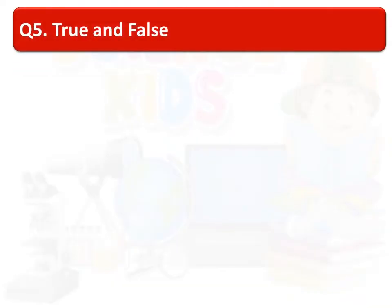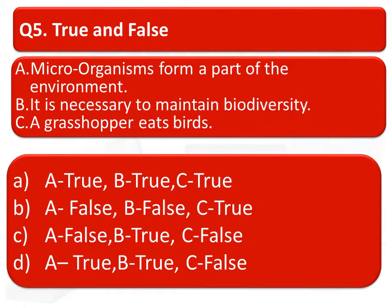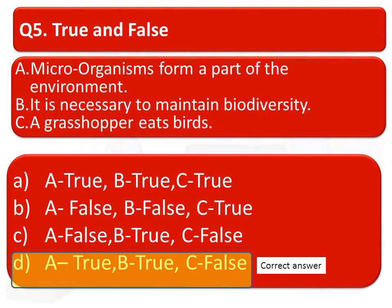The next one is true and false. Read these statements and find out which is true and which is false. Statement A: microorganisms form a part of the environment. Statement B: it is necessary to maintain biodiversity. Statement C: a grasshopper eats birds. The correct answer is option D — A is true, B is true, and C is false.